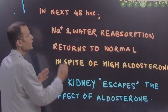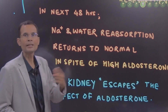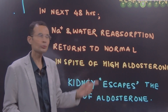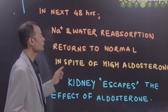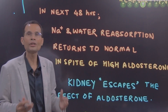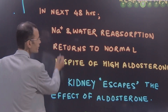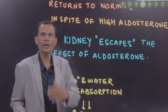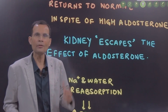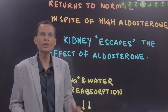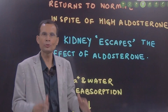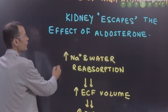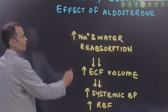This effect has been called aldosterone escape — the kidney escapes the effect of aldosterone. Initially there was that effect, but eventually the kidneys escape the effect of aldosterone, meaning increased sodium and water reabsorption returns to normal. It may not happen in every individual; it may happen only in a few. So the kidney escapes the effect of aldosterone. What is the physiology behind it?